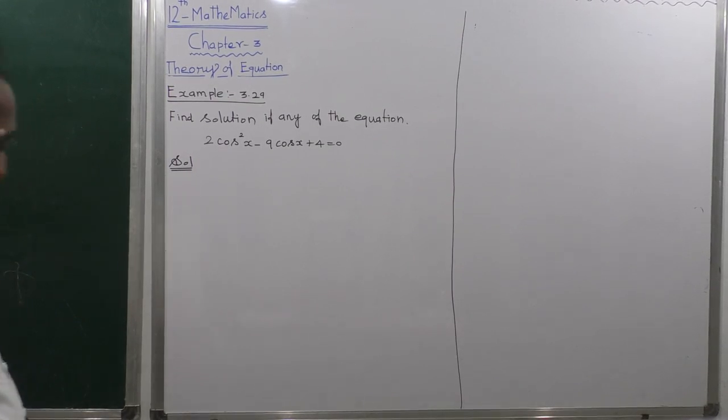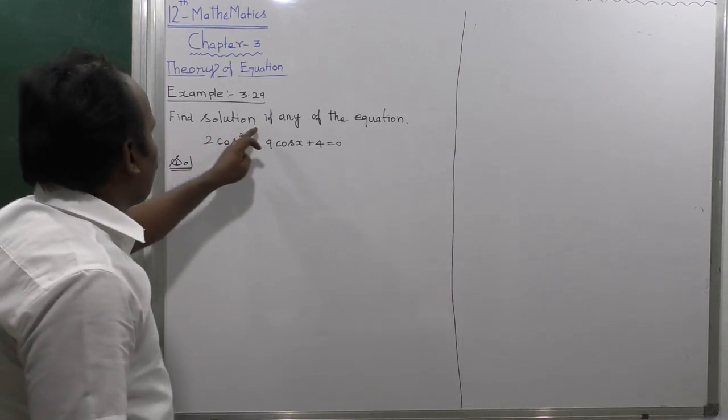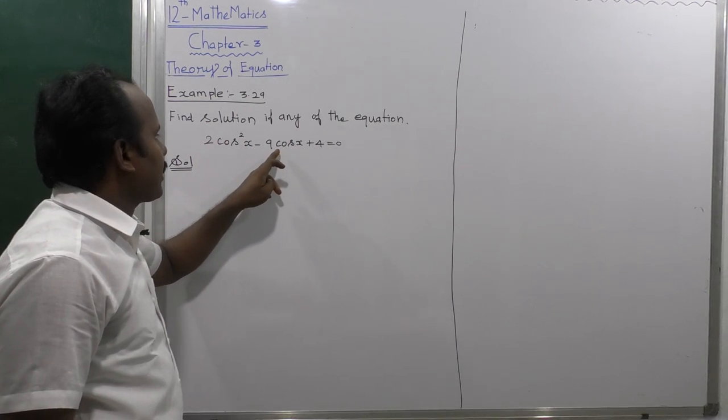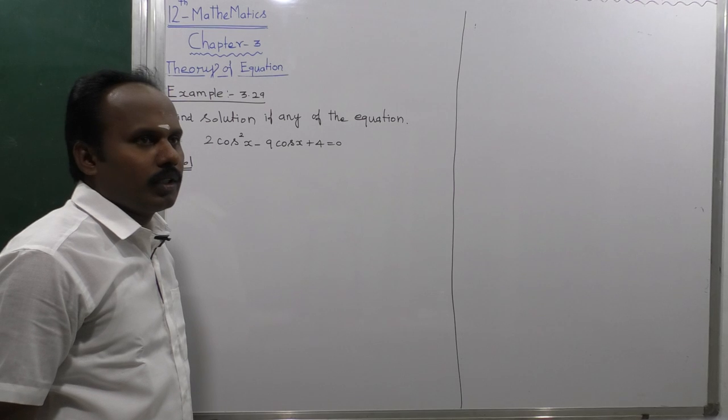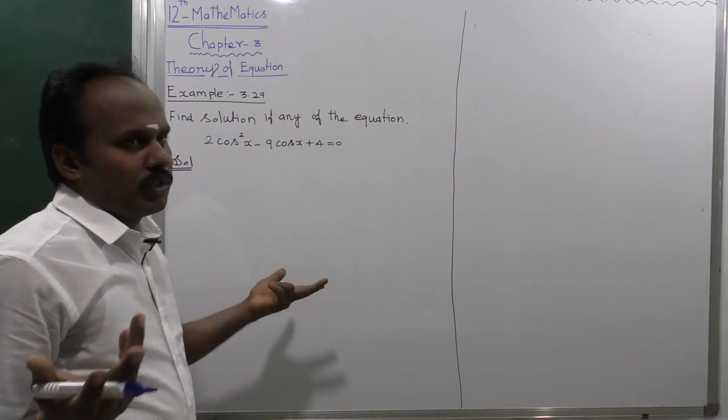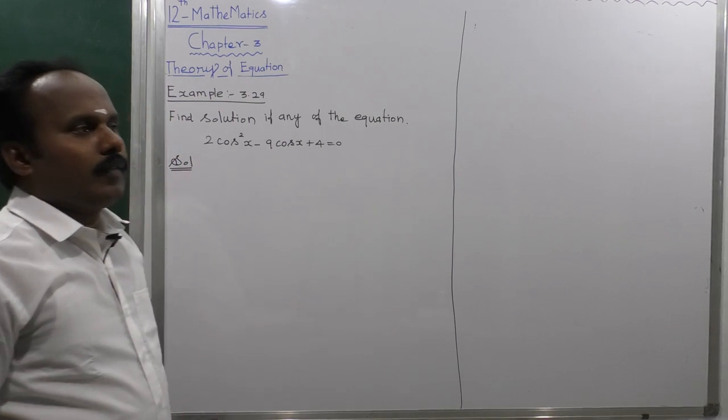Example 3.29: Find the solution if any of the equation 2cos²x - 9cosx + 4 = 0. This is a trigonometrical equation. We don't have a direct solution for this type of equation.